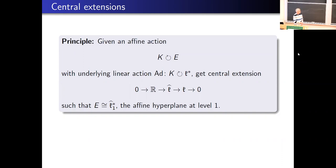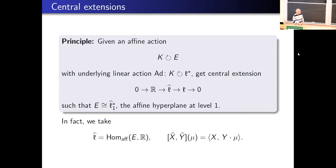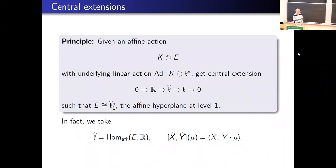I guess everybody knows this principle in some form but I wanted to say it very explicitly. Concretely, you define K-hat as the affine linear functionals on this affine space. There's a natural map from affine linear functionals to linear functionals, giving the map from K-hat to the dual of the Lie algebra. The bracket can then be written down explicitly — given x-hat and y-hat, with x and y as corresponding linear functionals, the formula is very simple.